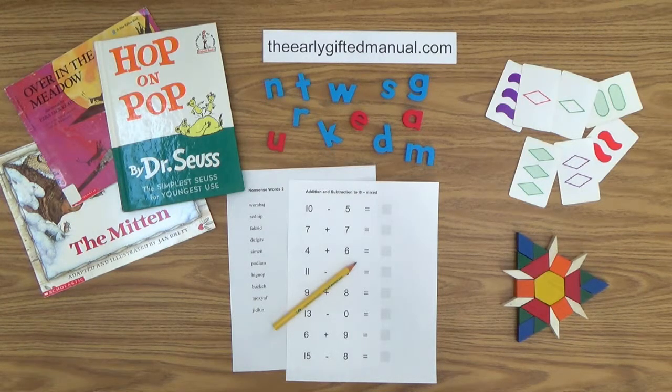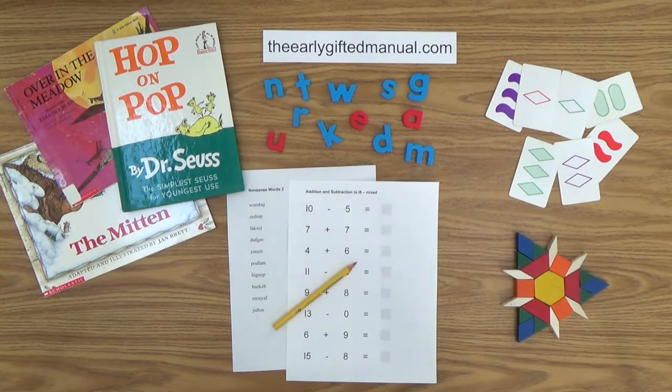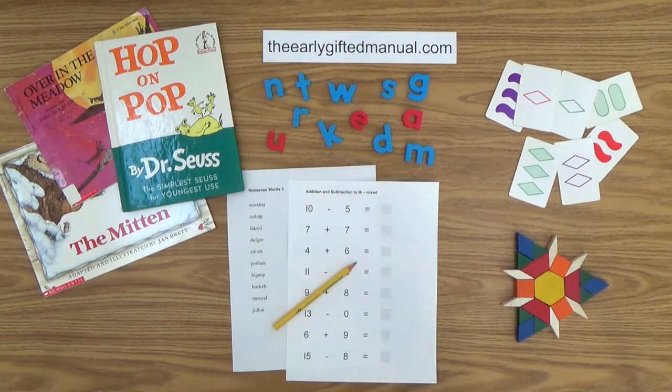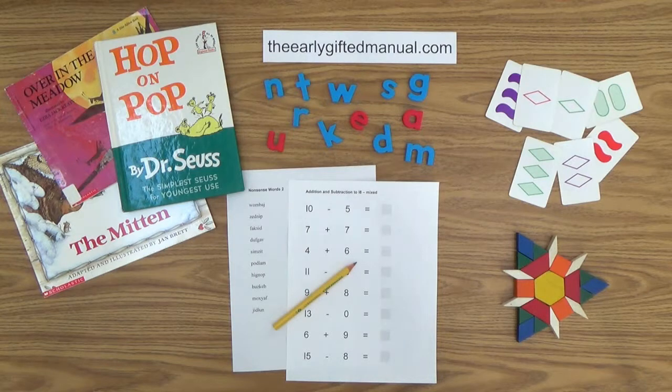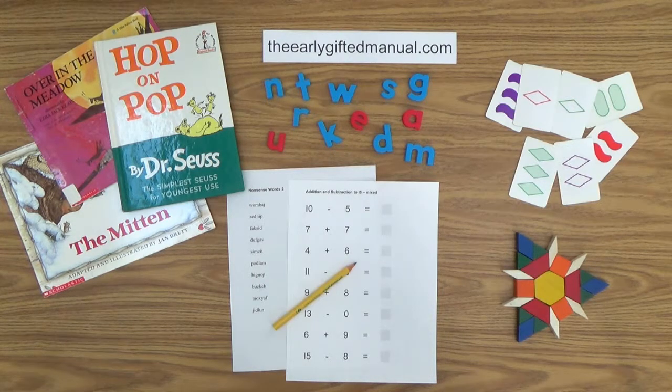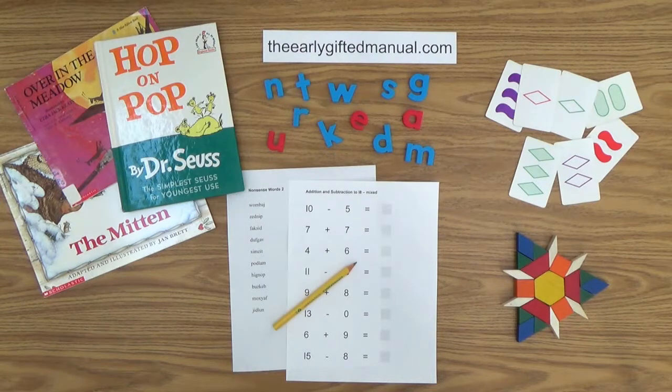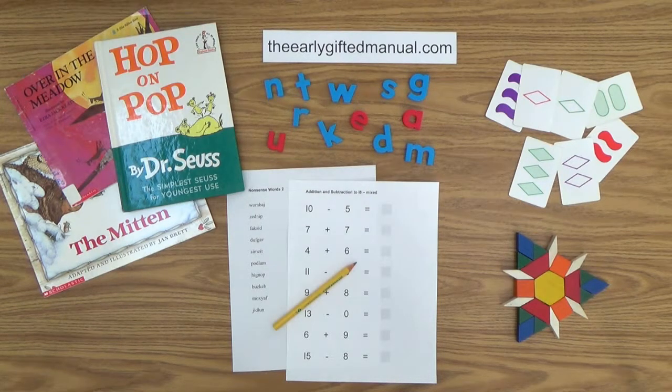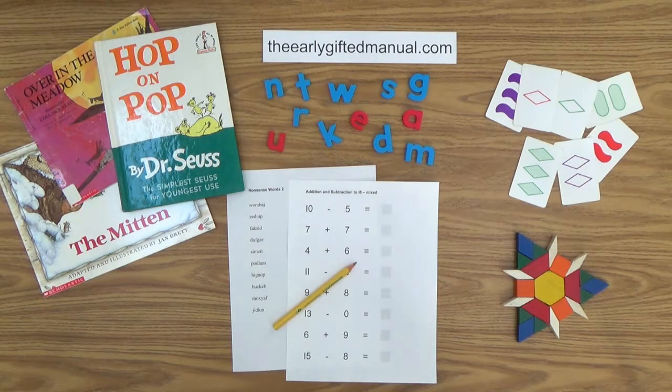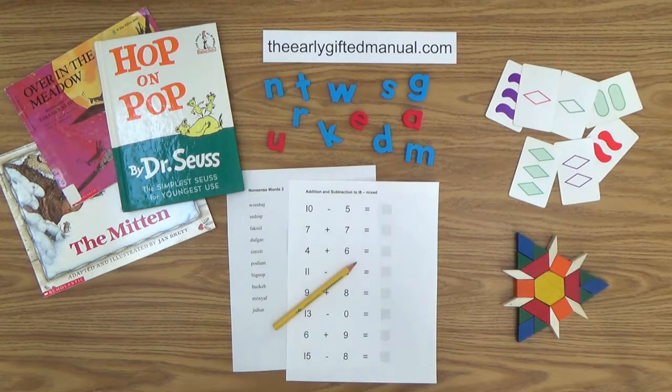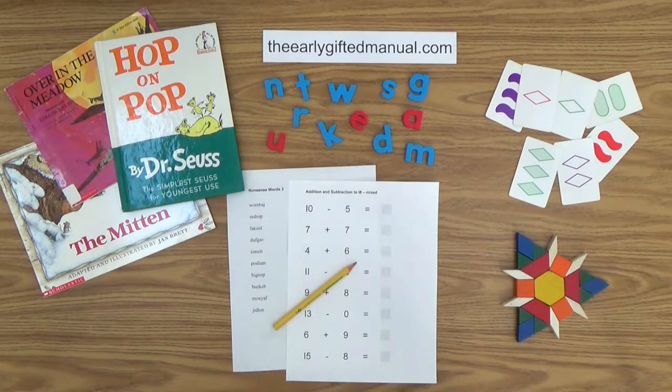As the video lessons are designed to work in conjunction with the program on my website, I ask you to, at some point, click on the URL link in the description box below and this action will take you to theearlygiftedmanual.com. By doing that, you will be able to put this lesson and all of the video lessons here on my channel in the proper context of the total program that I am presenting to you and your child.